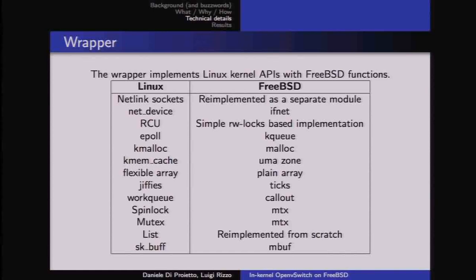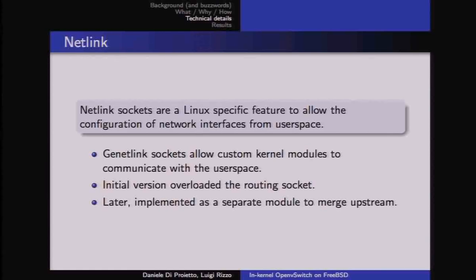We have a partial list of things needing re-implementation in FreeBSD. For netlink sockets, we first tried extending the routing socket with extra checks, but then decided to implement a completely standalone version of the netlink socket as a separate module.